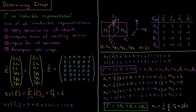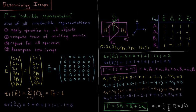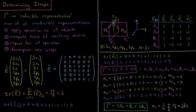So the irreducible decomposition of this reducible representation is 3A1 + B1 + 2B2. Effectively, three of the six orbitals combine to make A1 molecular orbitals, one combination gives a B1 molecular orbital, and two give B2 orbitals. These six atomic orbitals will combine to generate 3A1, 1B1, and 2B2 molecular orbitals, consistent with the symmetry requirements of this point group.